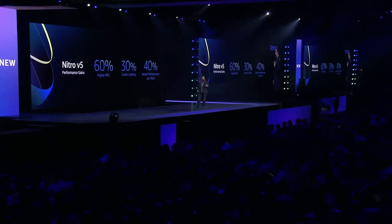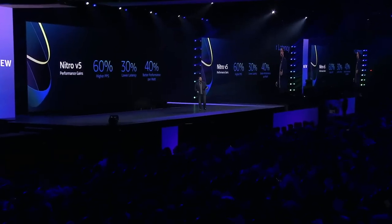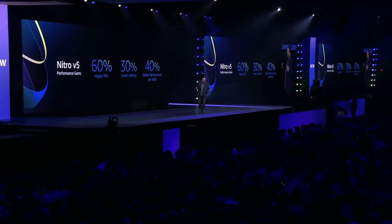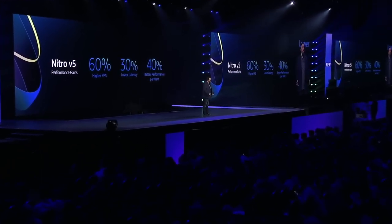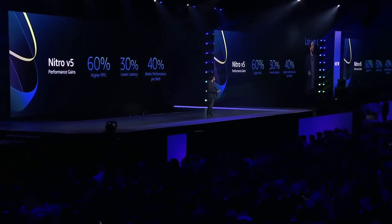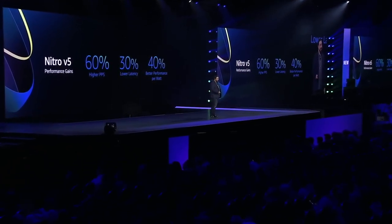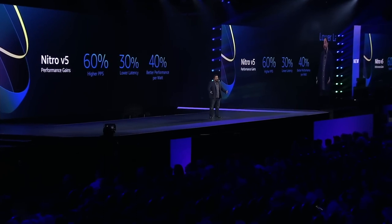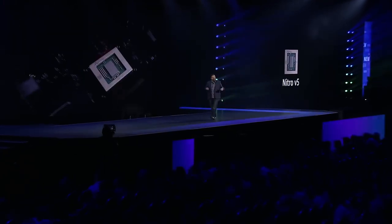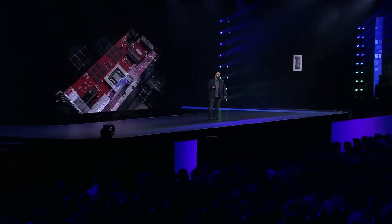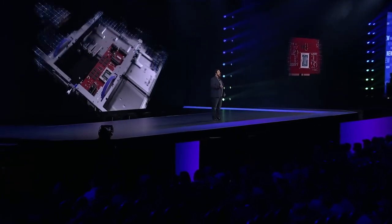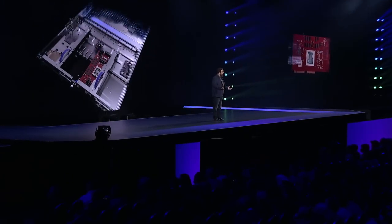What fun would it be to announce a new Nitro chip without a new EC2 instance to try it out on? I'm excited to announce the C7GN network-optimized EC2 instance — the first instance based on the Nitro V5 card.